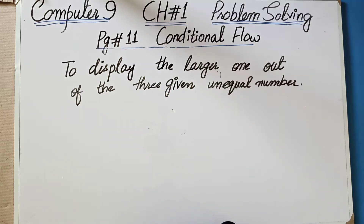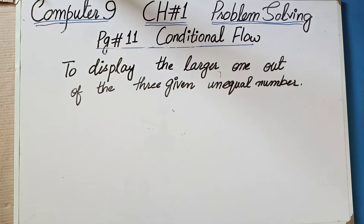In the previous class we had told you what conditional flow is, and we found out that a number is either even or odd. As you know, you have a new book — its first chapter is called Problem Solving. Today we will discuss the second example of conditional flow: to display the largest one out of three given unequal numbers. We will understand the problem and then its logic.